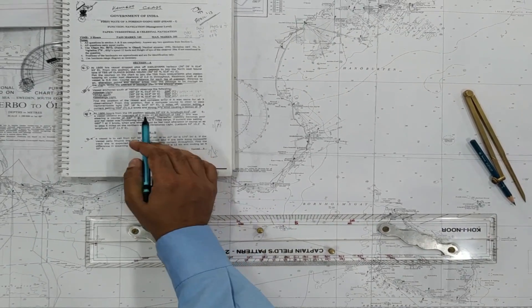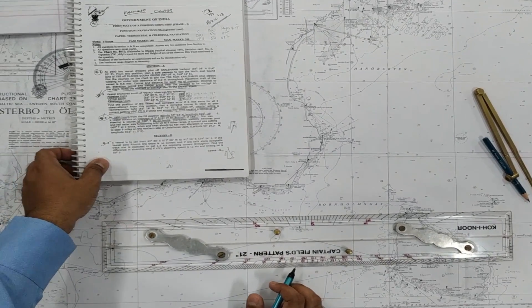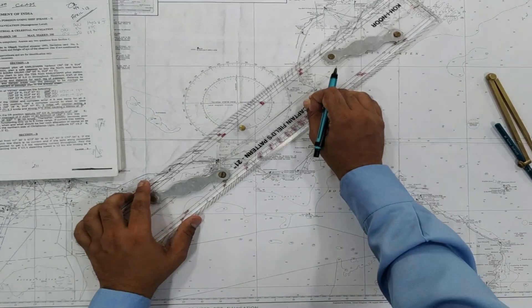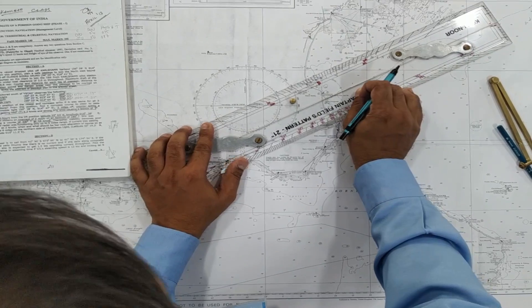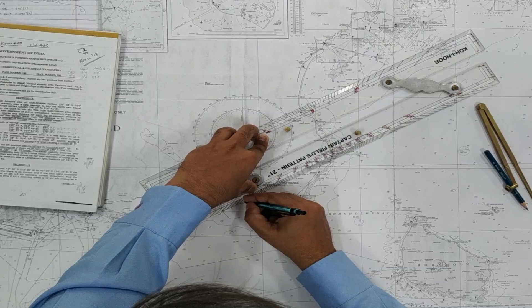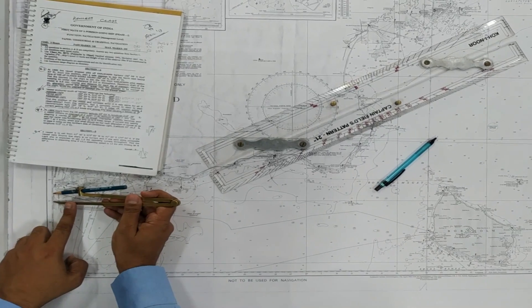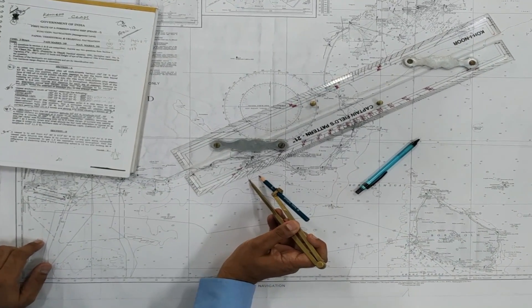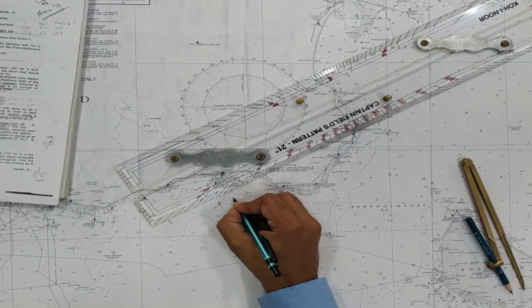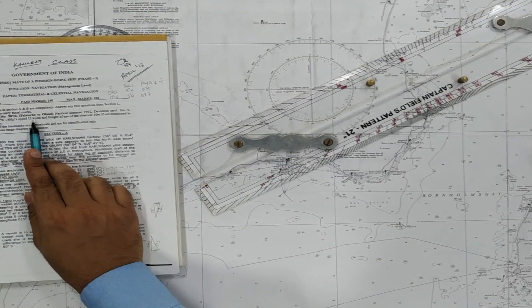You also have a current which is setting 060 degrees true and 2 knots. So we have to find out what is the course to steer. So from this location, we take 060. Again 2 miles off, it cuts at this point. So in one hour, the current will push the ship in here. The ship speed is given as 12 knots in the initial section.